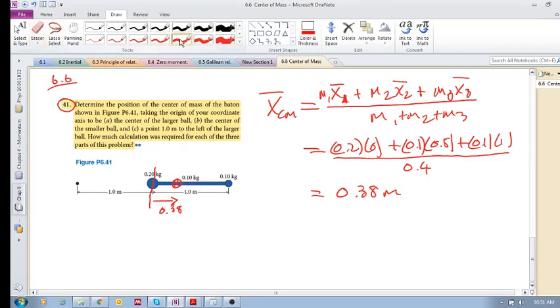And that makes sense, right? Because if this piece was 0.1, that is the same as this one, then it would be right in the center. But because more mass, there's more inertia towards this side, we know that the center of mass can't be at the center, it has to be over here.